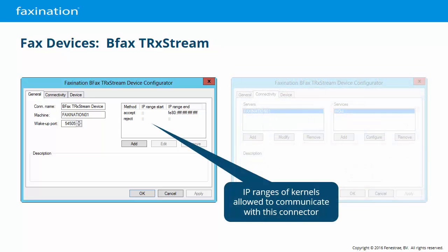Another security feature is that you can set the IP range, or whitelist, of kernels that are allowed to communicate with this connector. Connections originating from outside this range will be rejected with no response. You can also create blacklists of IP ranges to reject. It's rare for FaxNation to be installed in a hostile environment that would require this level of security, but it's there if you need it.